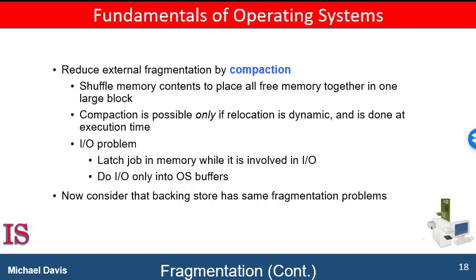One solution to the problem of external fragmentation is compaction. The goal is to shuffle the memory contents to place all the free blocks together into one large block. Compaction is not always possible, though. If relocation is static and is done at assembly or load time, compaction can't be done. It is only possible if relocation is dynamic and is done at execution time. If addresses are relocated dynamically, relocation requires only moving the program and data and then changing the base register to reflect the new base address.